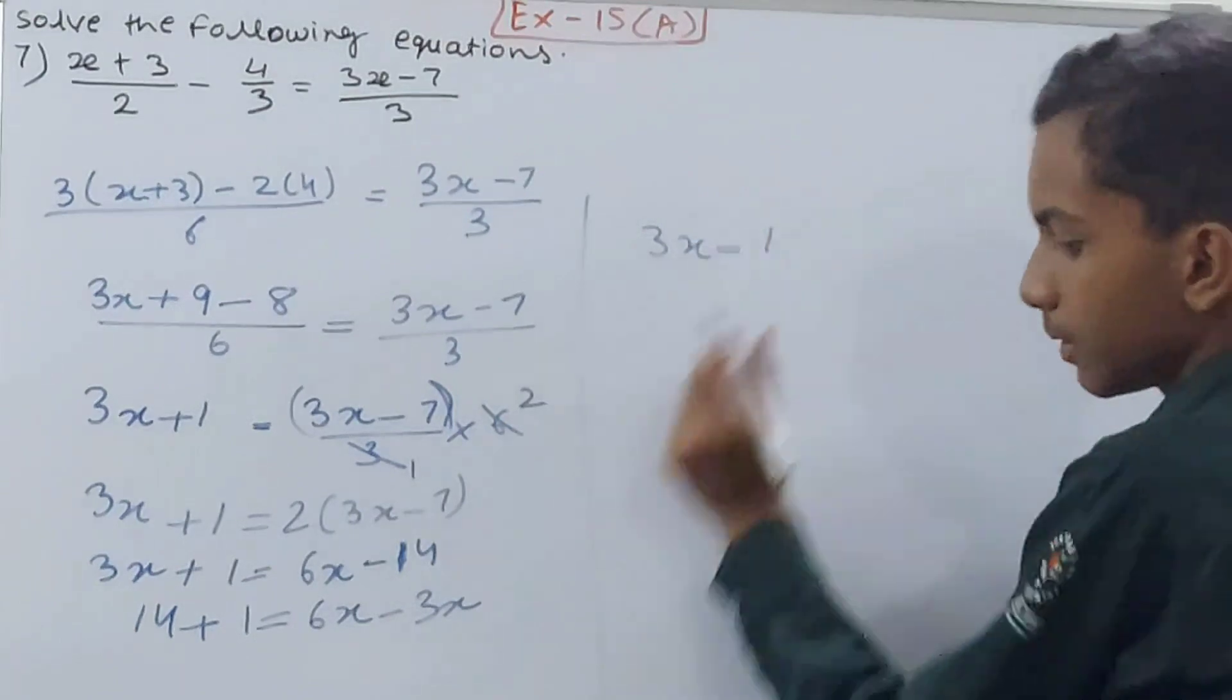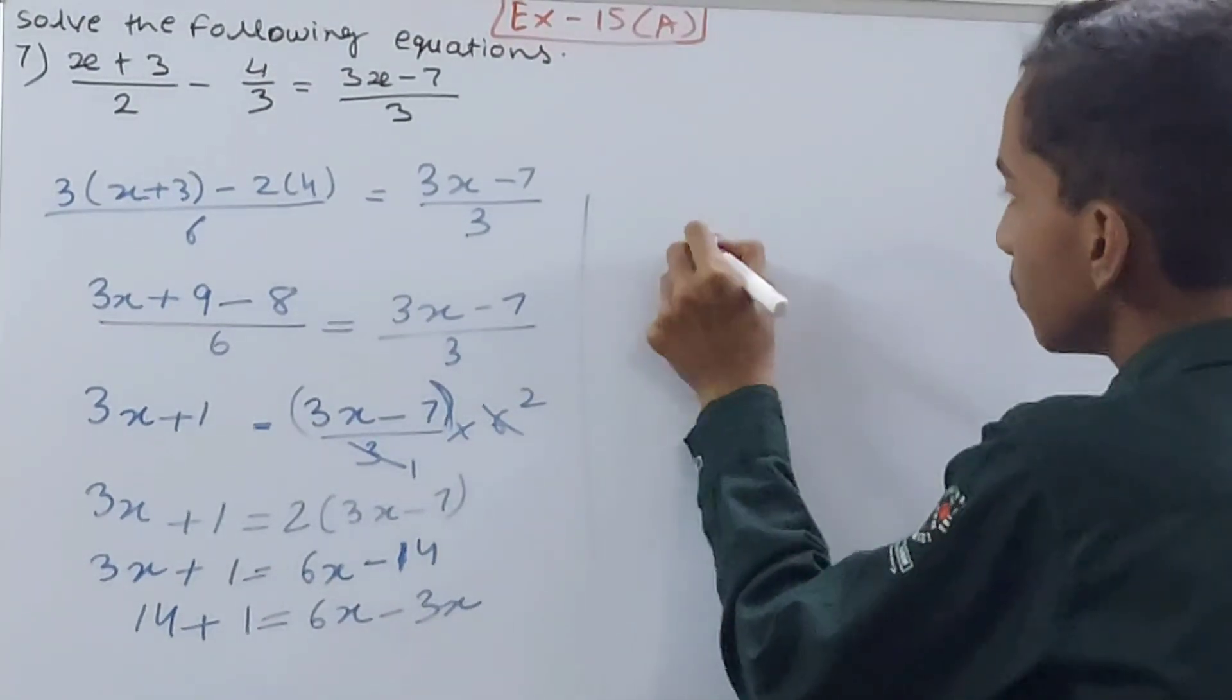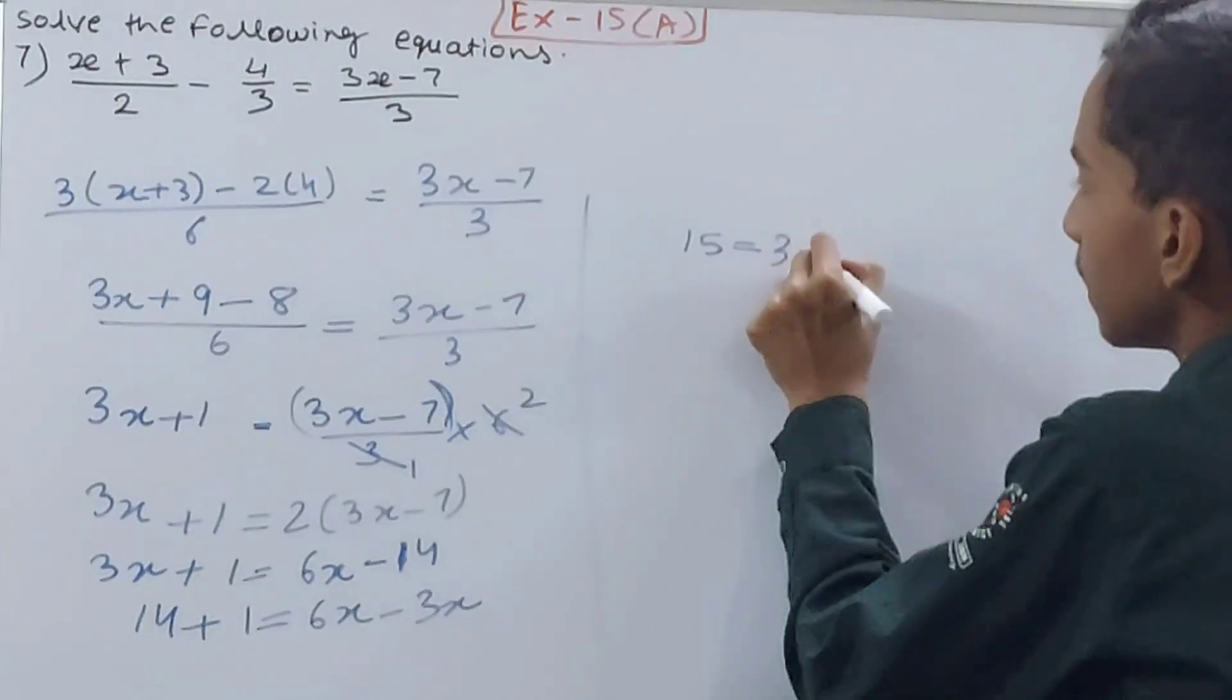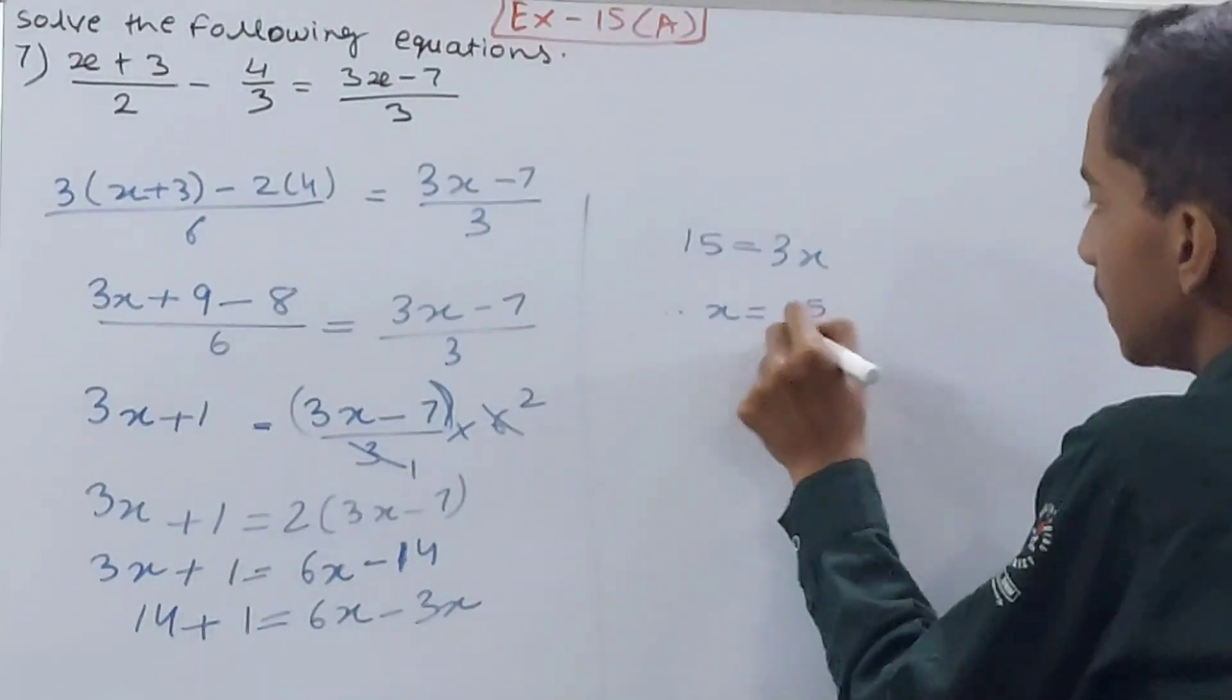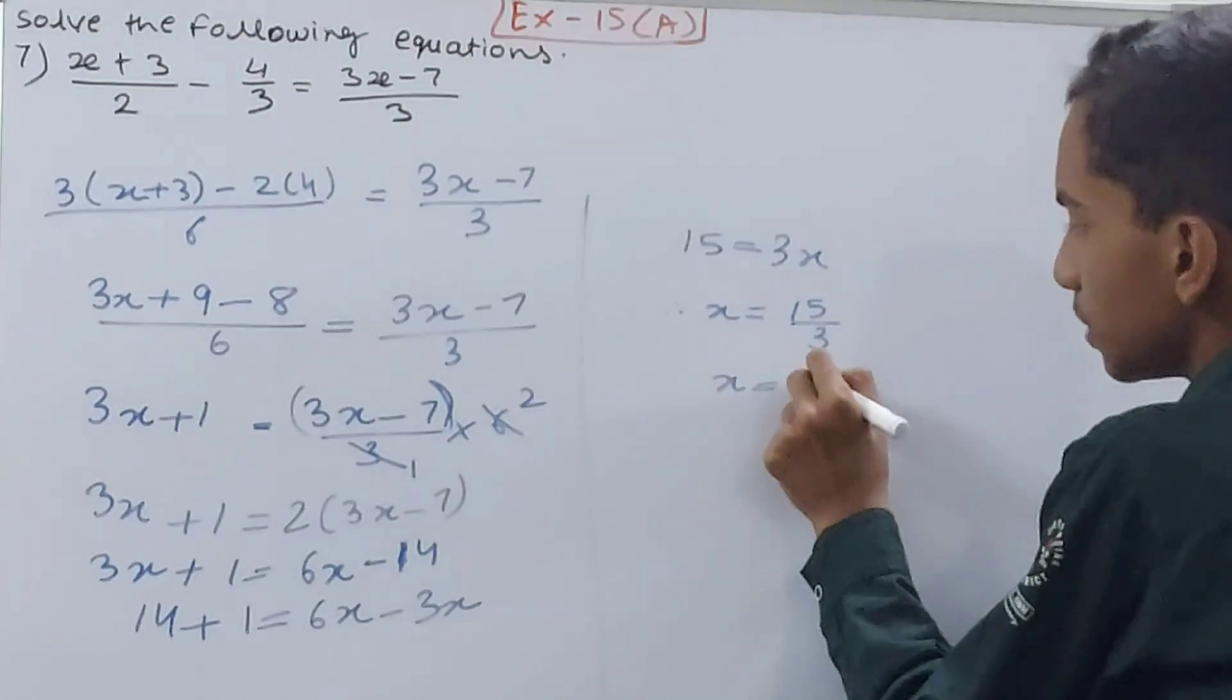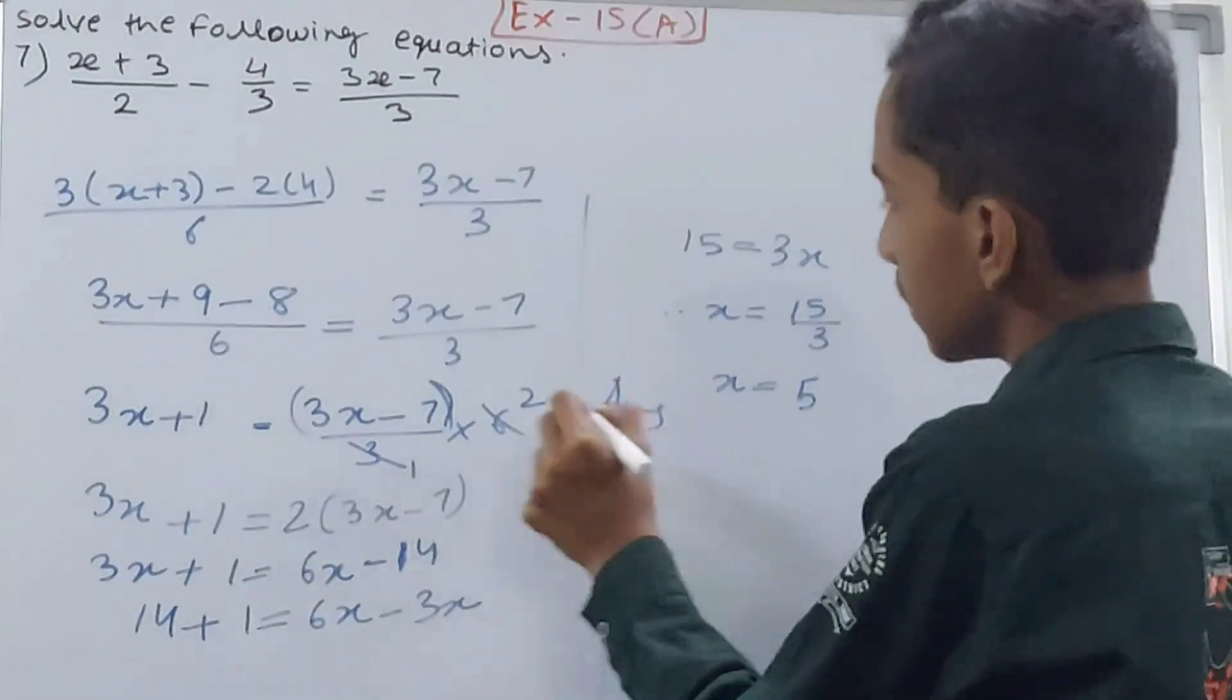Therefore x = 15/3, that means x = 5. And that's your answer.